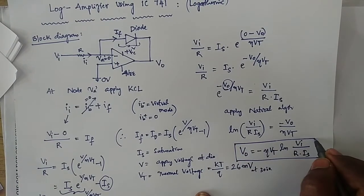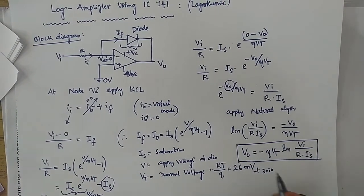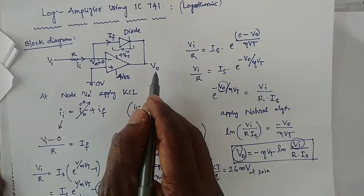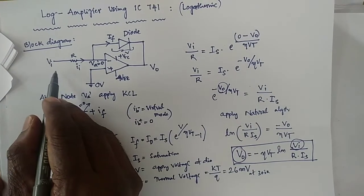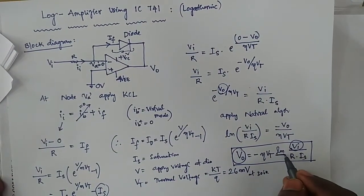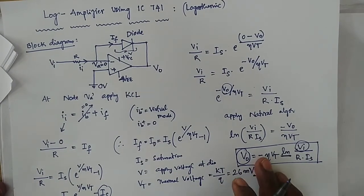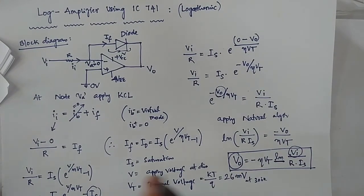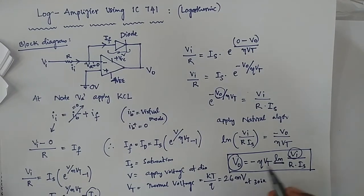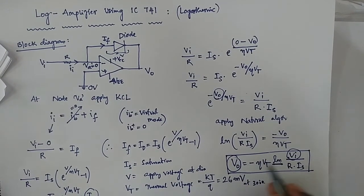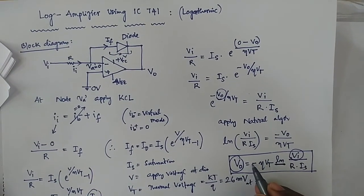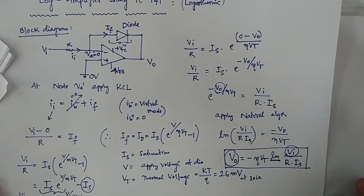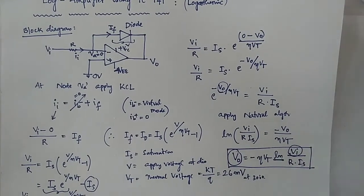This is the actual final equation showing the relationship between input voltage and output voltage — it is logarithmic. That is why this circuit is called a logarithmic amplifier: the output voltage is equal to the logarithm of the input voltage. Thank you.